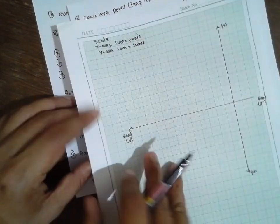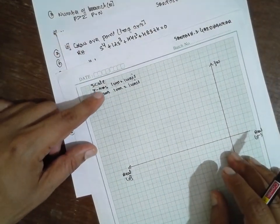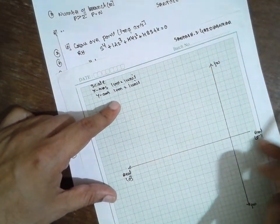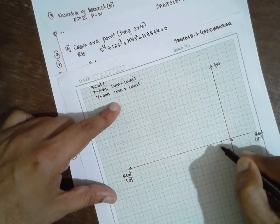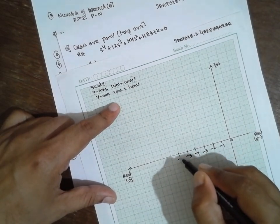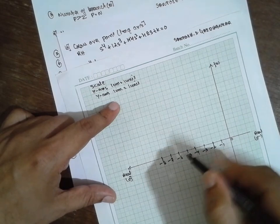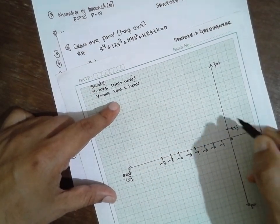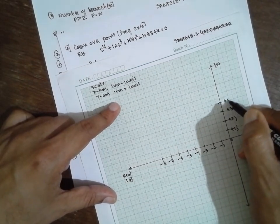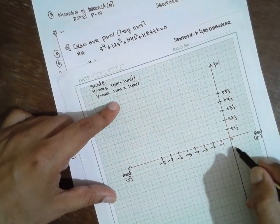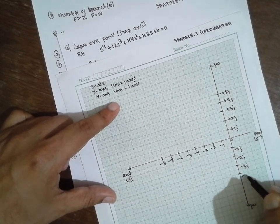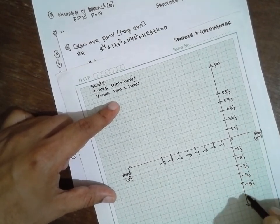Now drawing the graph. The scale is 1 cm = 1 unit on both axes. On the real axis, marking −1, −2, −3, −4, −5, −6, −7. On the imaginary axis, marking +j, +2j, +3j, +4j, +5j and −j, −2j, −3j, −4j, −5j, −6j.